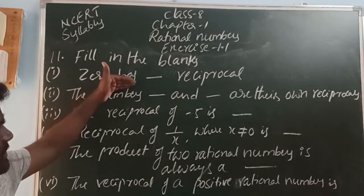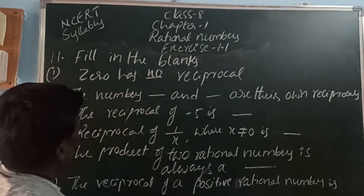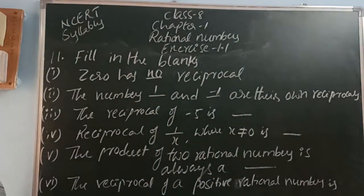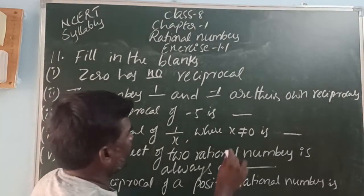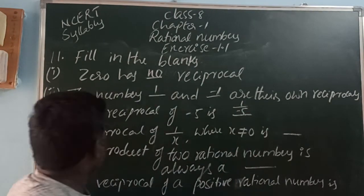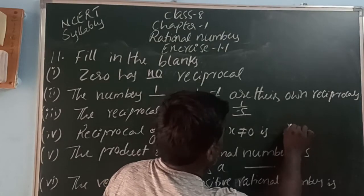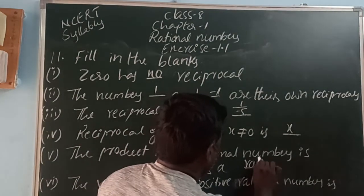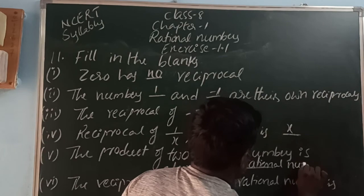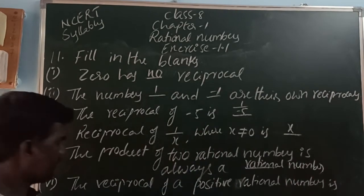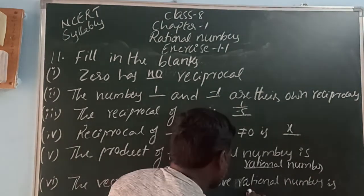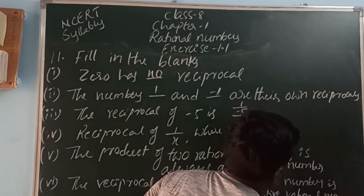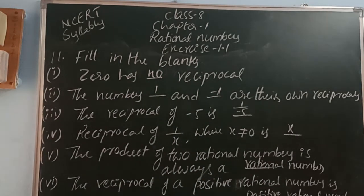Fill in the blanks. 0 has no reciprocal. The numbers 1 and minus 1 are their own reciprocals. The reciprocal of minus 5 is 1 by minus 5. The reciprocal of 1 by x, where x is not equal to 0, is x. The product of two rational numbers is always a rational number. The reciprocal of a positive rational number is a positive rational number. The reciprocal of a negative rational number is a negative rational number.